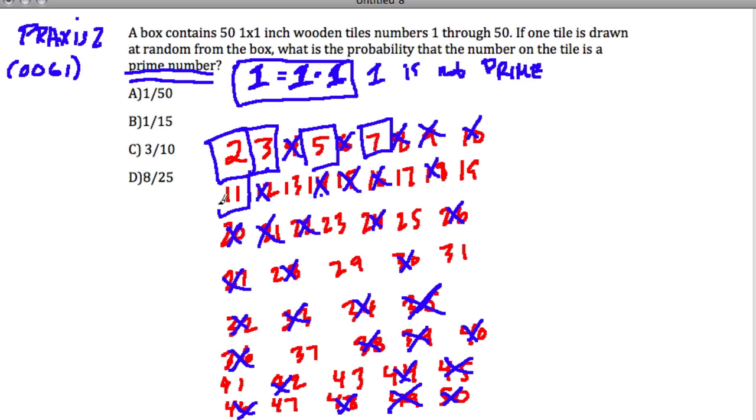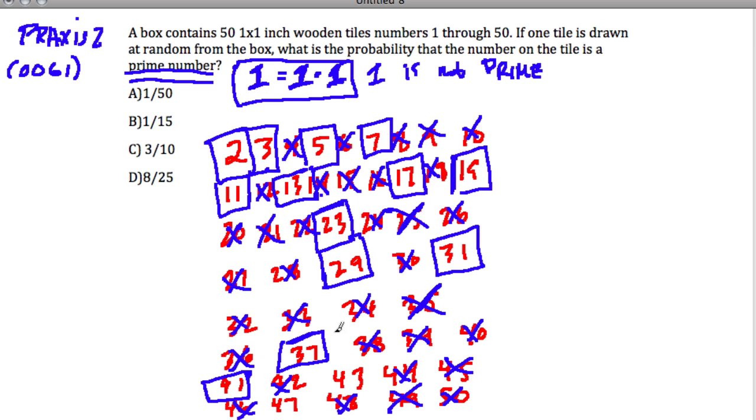Now, eleven is prime. Multiples of eleven, I don't see any here. Thirteen, twenty-six, thirty-nine, right, and that's it. Prime. Seventeen is prime. Thirty-four is also not prime, doubling seventeen. Nineteen is prime. Twenty-three is prime. Twenty-five, how did I miss that one? That's a multiple of five, that's not prime. Twenty-nine, is that prime? Yes. Thirty-one, that's prime. Thirty-seven, that's prime. Forty-one. All I'm doing to double-check is if I look at thirty-seven, I look at the factors before, and none of them go into it, so it's prime. Forty-three is prime, and forty-seven is prime. Wow. So there's the prime numbers.